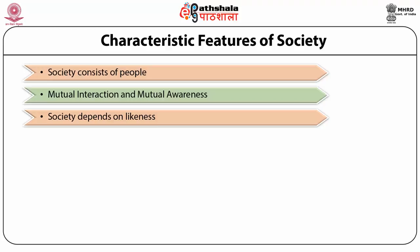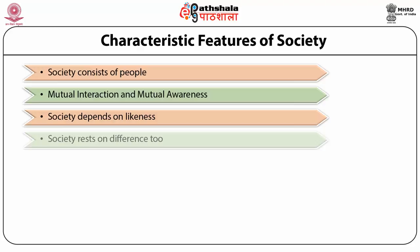Just as the birds of the same feather flock together, men belonging to the same species called homo sapiens have many things in common. The next characteristic is that society rests on differences too. Society also implies difference. A society based entirely on likeness and uniformities is found to be loose in sociality. If men are exactly alike, their social relationships would be very much limited. There would be little give and take, little reciprocity. They would contribute very little to one another. Life becomes boring, monotonous and uninteresting if differences are not there.